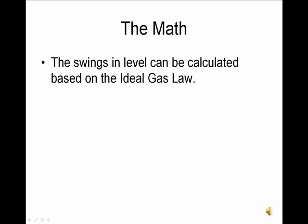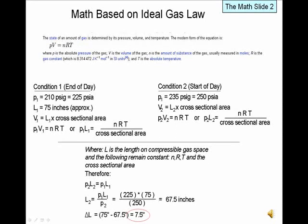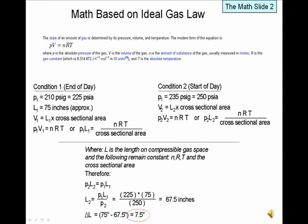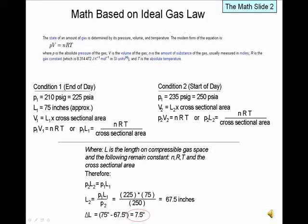The swings in level or drift can be calculated based on the ideal gas law. This slide highlights the compressible gas section on the high phase line; for our calculation, this length will be known as L. The ideal gas law states the amount of gas is determined by its pressure, volume, and temperature, represented with the equation PV = nRT. We can use this relationship to determine the change in compressible gas space in the high phase line. In our example, nR and T are constant; therefore, the starting and ending conditions must follow P1 × V1 = P2 × V2. We know the starting and ending pressures, and the volume can be related to the length of the phase line.